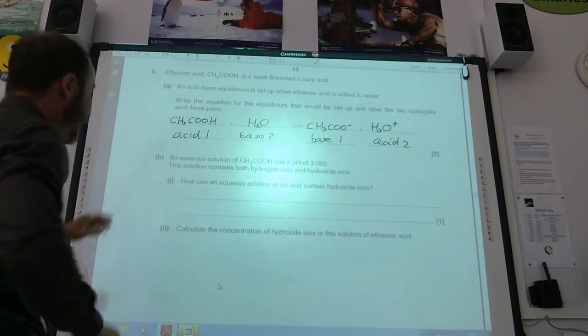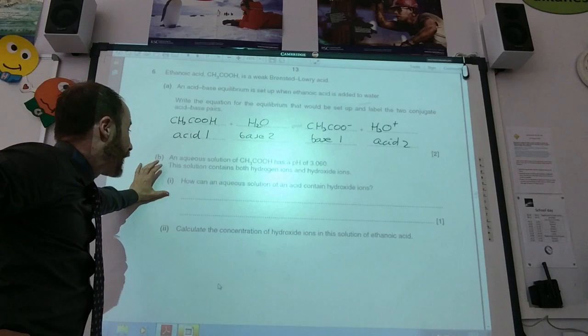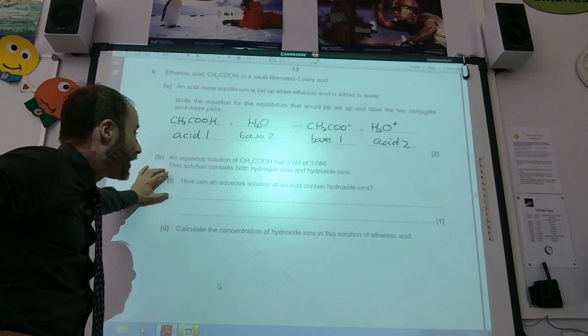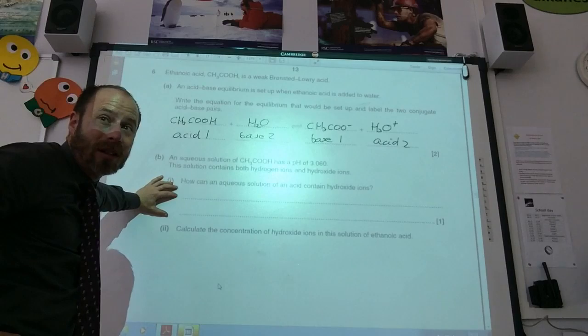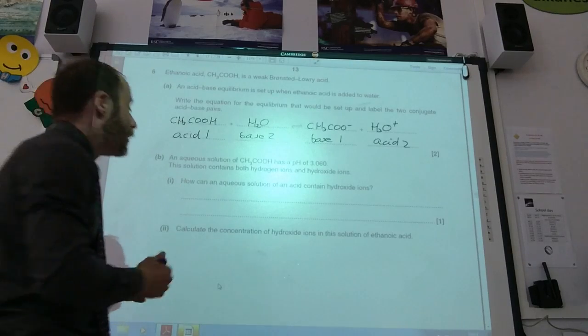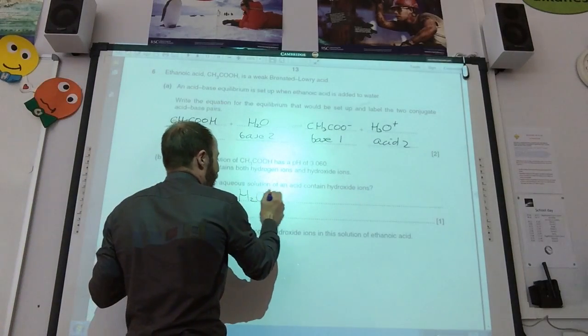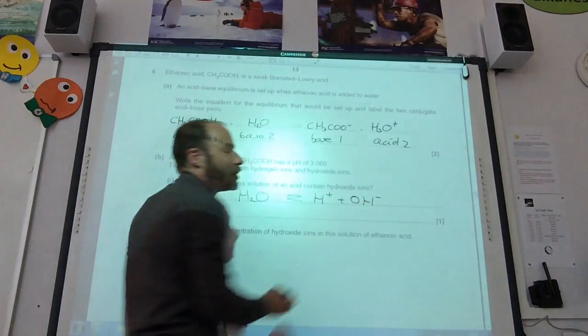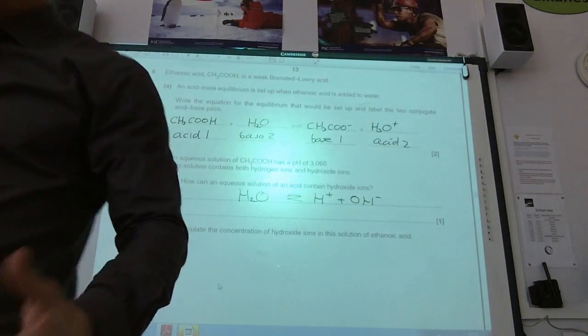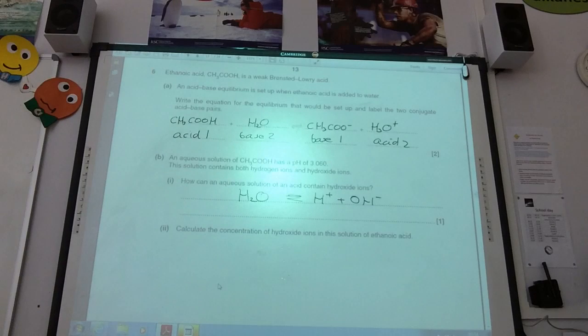An aqueous solution has a pH. Students might say it has both hydrogen ions and hydroxide ions. How can an aqueous solution contain hydroxide ions? Where do those hydroxide ions come from? Water, because water can dissociate. It comes from the dissociation of water.